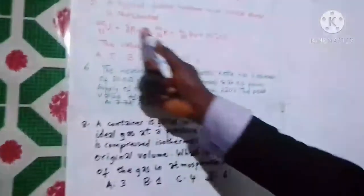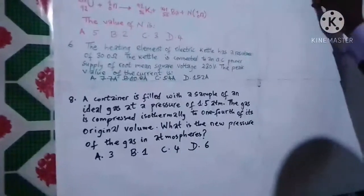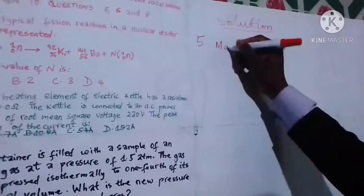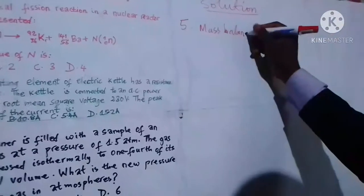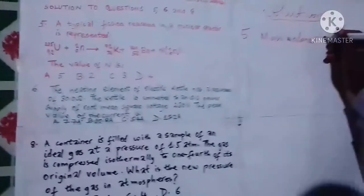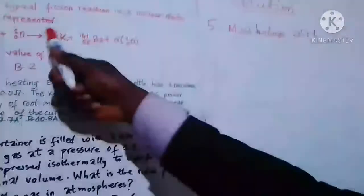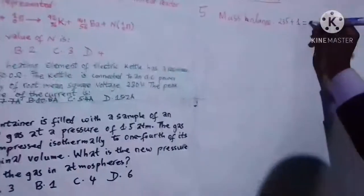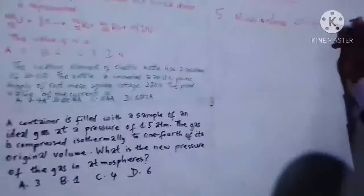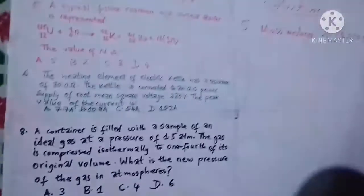Let's translate this equation into the language of mathematics. Solution — equation number five, mass balance: 235 plus 1. This arrow becomes an equal sign. We have 192 plus 141 plus n times 1, which gives us n.